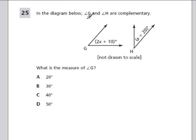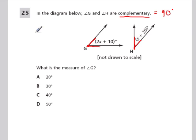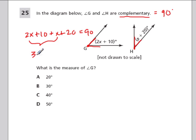Here it tells us that angle g and angle h are complementary — c-o-m-p-l-e-m-e-n-t-a-r-y — meaning they add up to 90 degrees. Angle g is 2x plus 10, angle h is x plus 20, and together they equal 90 degrees. Adding like terms: x and 2x gives 3x, and 10 plus 20 gives 30. So 3x plus 30 equals 90.